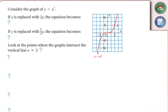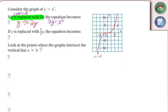To start off, we're going to do a replacement. Let's replace y — wherever you see a y, put a 2y. So in our equation, 2y equals x cubed. We replaced the y, so that's vertical. But we want to resolve for y so we can graph it, giving us y equals one-half x cubed.